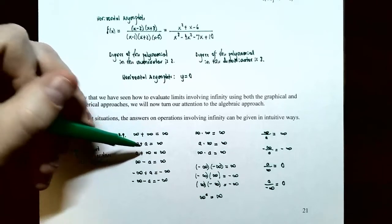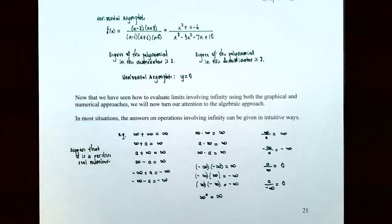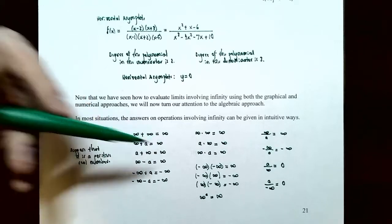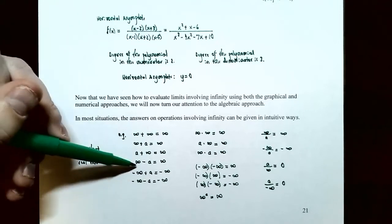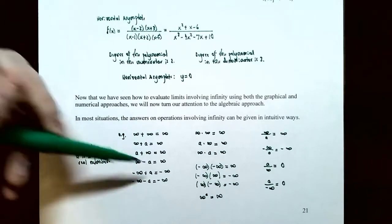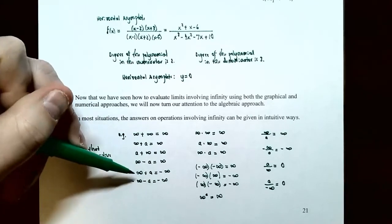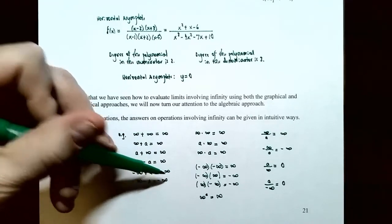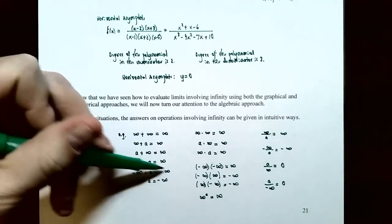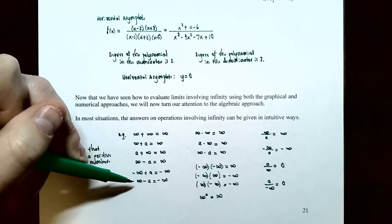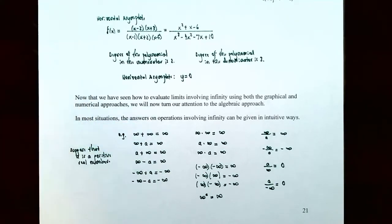Infinity plus a positive real number a is still infinity, since infinity is very large. So a plus infinity is infinity. If you take a very large number and subtract a real number, it's still a very large number, so infinity subtract a is infinity. Negative infinity plus a real number is negative infinity — a very large negative number plus a real number is still a very large negative number. And negative infinity subtract a real number is also negative infinity.